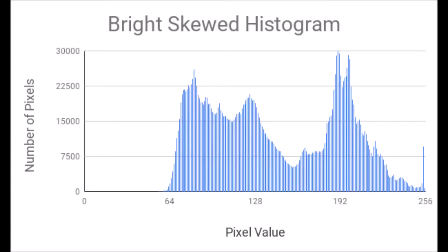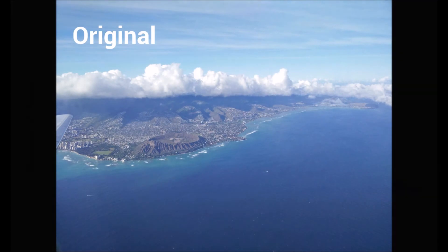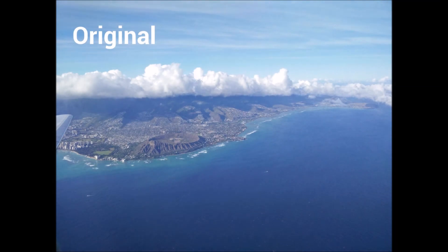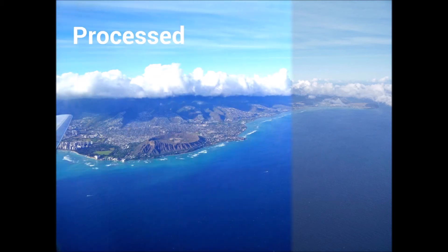Another area with which the algorithm struggles is in images that have a strongly skewed distribution with either high or low values. In these cases, there's a very clustered distribution of color composition, so the program alters it very aggressively, but this tends to be too much for whichever part of the image is already at an extreme. For example, this image has a very bright area but nothing very close to pure black, so while the ocean will look darker — increasing dynamic range — the clouds become blown out.